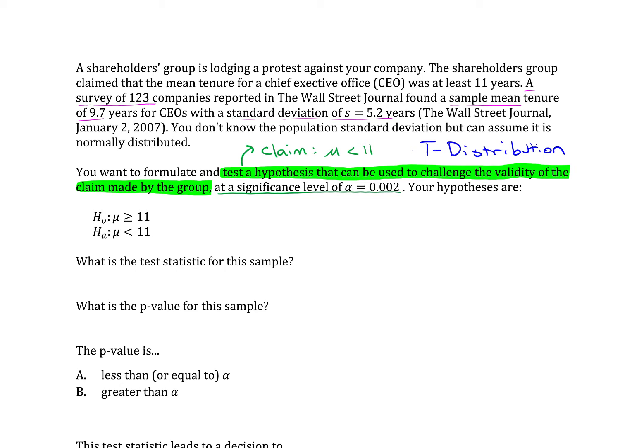But we can only use that if we know that the central limit theorem is satisfied. To satisfy the central limit theorem, one of two things needs to be true. Either the original population needs to be normal, which is actually stated here. You can say the original population is normally distributed. That's great. So that satisfies the central limit theorem.